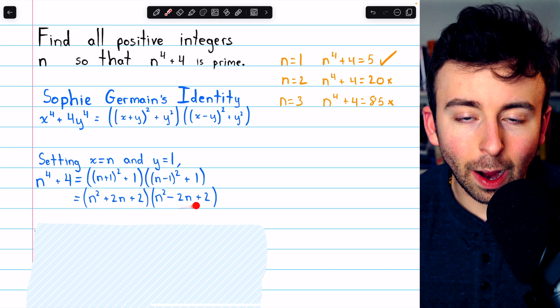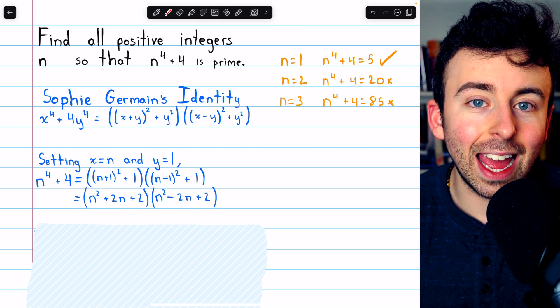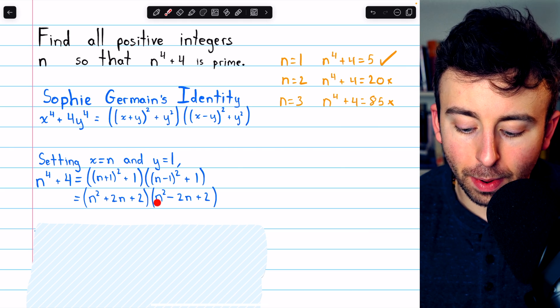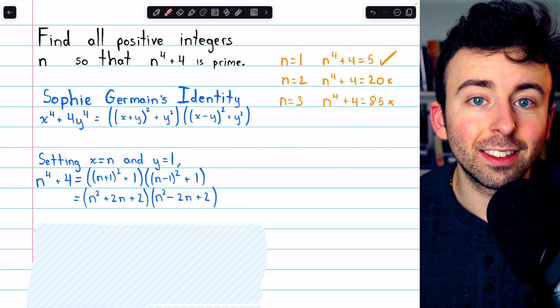So then this basically gives us our answer. If we plug in n equals 1, you're going to get 5 multiplied by 1. Of course, that's prime.